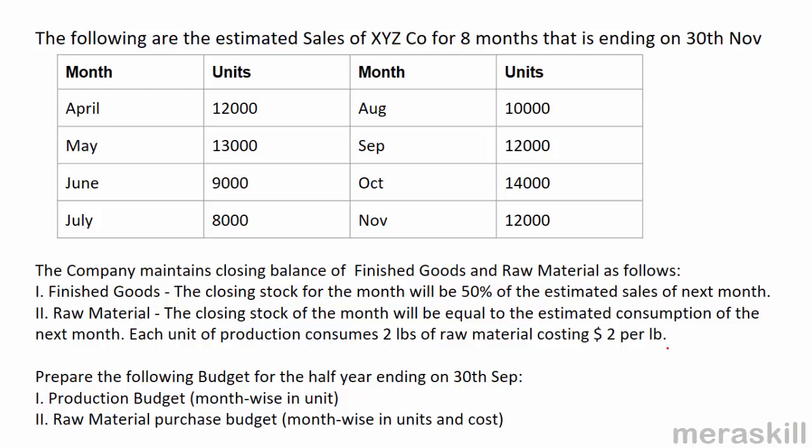Each unit of production consumes two pounds of raw material costing $2 per pound. We are supposed to prepare, for the half year ending 30th September: a production budget month-wise in units, and a raw material purchase budget month-wise in units. The production budget depends on units to be sold, plus closing inventory minus opening inventory of finished goods.